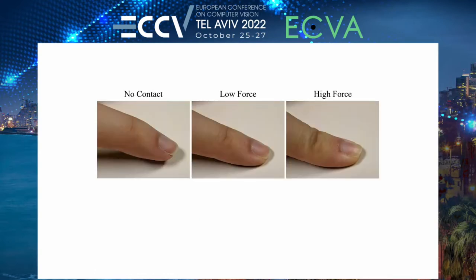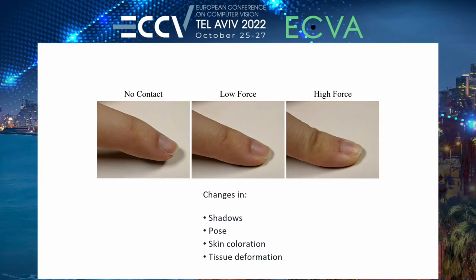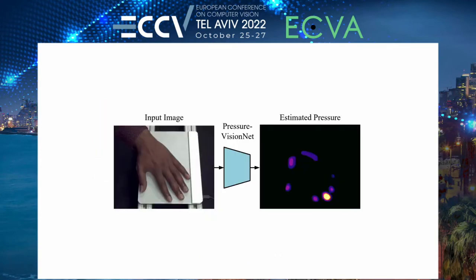Our central insight is that hands display subtle visual cues that indicate the presence of pressure. In this example, as force increases, the shadows cast by the hand change, the distal finger joint hyper-extends, the skin underneath the fingernail loses color, and the tissue deforms. Our work investigates if a neural network can reliably interpret these signals and estimate pressure.